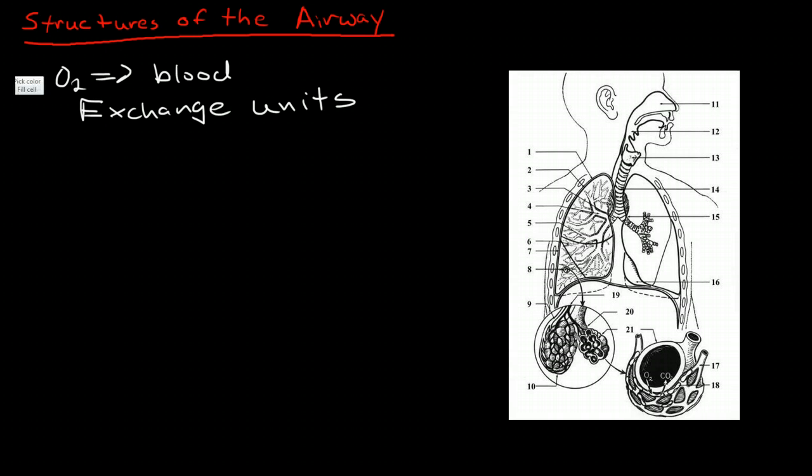And these exchange units include the alveoli which are little air sacs which you can see here. The microscopic air sacs that are at the very end of the bronchioles and respiratory bronchioles.